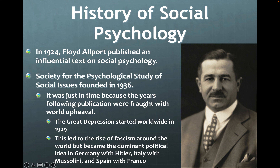Fascism became very popular around the world. Mussolini was a fascist leader in Italy, Hitler in Germany, and Franco in Spain. They fought the Spanish Civil War in the late 1930s and Franco won. In 1939, World War II started and Hitler and Mussolini attacked people around the world trying to force them to accept their fascist ideas.